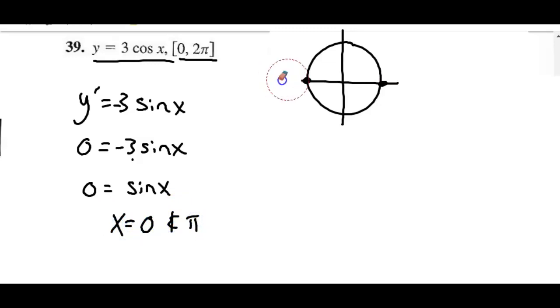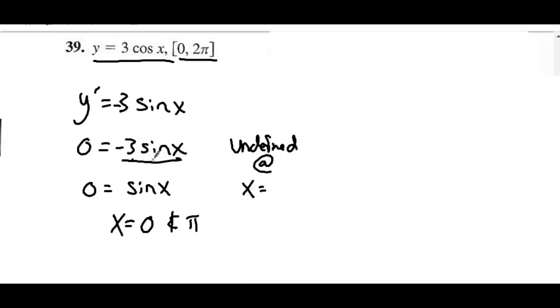Okay, the next thing we do is we want to find where is this thing undefined. Well, sine is never undefined. It's like cosine. It's continuous everywhere. So, we're going to say there are no places where it's undefined. So, we have two critical values that we're concerned with here. Okay, candidates test. Endpoints. Critical values are 0 and pi. I've already got 0, so I just need to put pi in there. And from there, we just go ahead and solve things out.